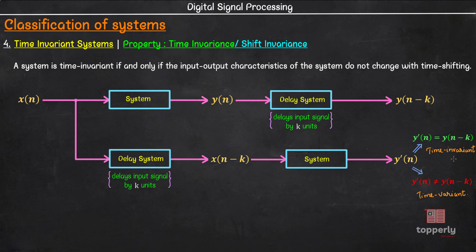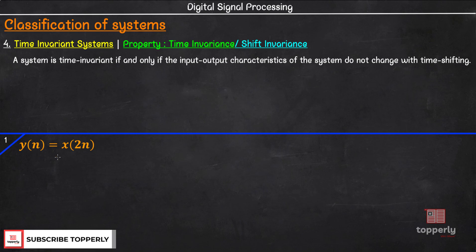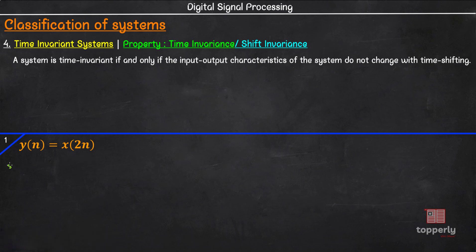Let us now see three solved examples on this topic. Each of the three examples is important as each one discusses a property of time invariant systems, so please pay close attention. The first system is y(n) = x(2n). To check for time invariance, we will follow the procedure we just learned. In the first step, we will provide a generic input x(n) as input to the system. The output will be y(n) = x(2n).